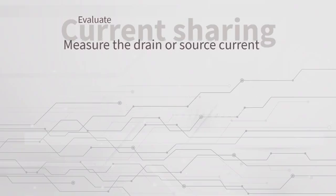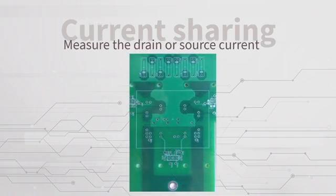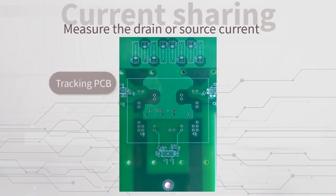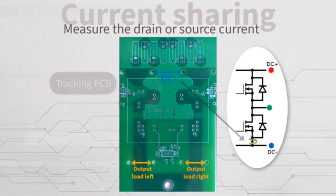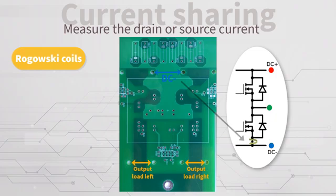To be able to evaluate the current sharing, it is required to measure the drain or source current. This can be achieved by tracking the PCB and having holes in the board to enable the insertion of Rogowski coils.